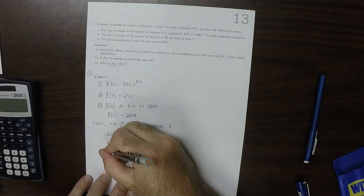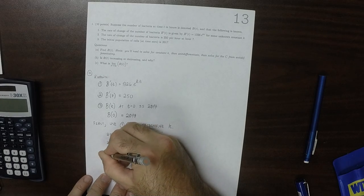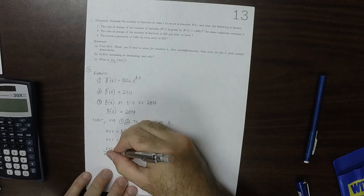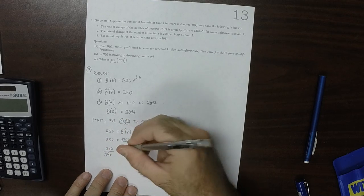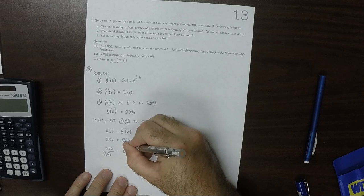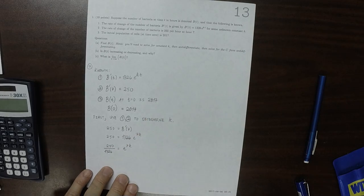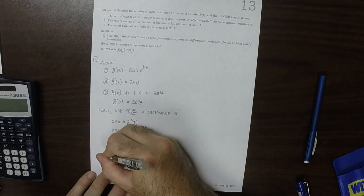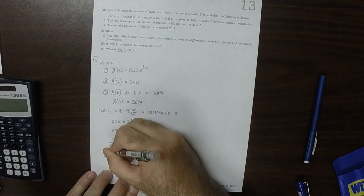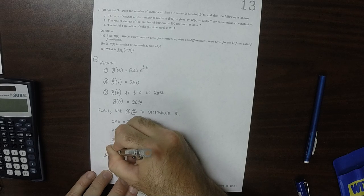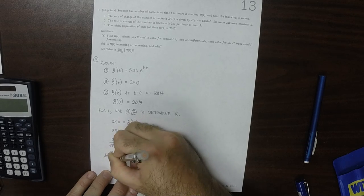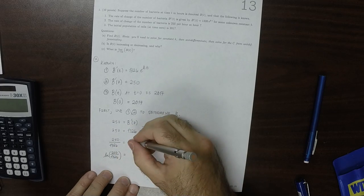So now we're going to take that equation and solve for k. I'll divide by 1,326, so 250 over 1,326 is e to 7k. And then now to get the k out of the exponent, I'll compute natural logarithm of both sides. So the natural log of 250 over 1,326 is 7k.